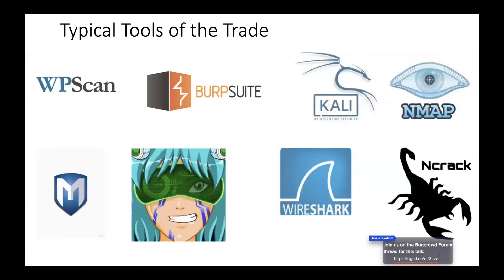WPScan is a WordPress scanning and enumeration tool — you can even use it to conduct password cracking. Burp Suite is probably one of the most important tools, along with Wireshark. Burp Suite is a web proxy that you're able to funnel all your traffic through and inspect the requests and the fields associated with them.